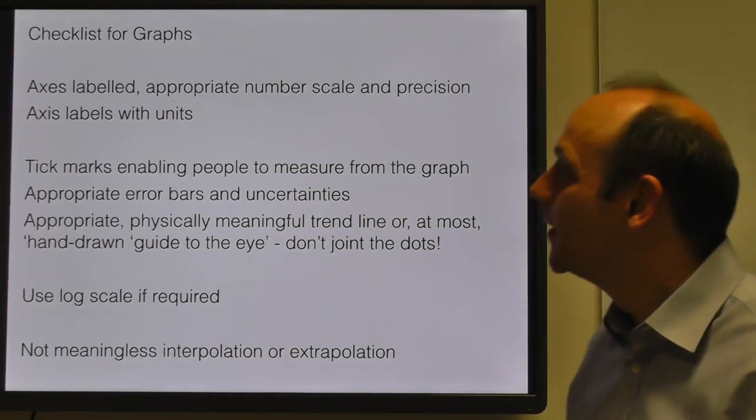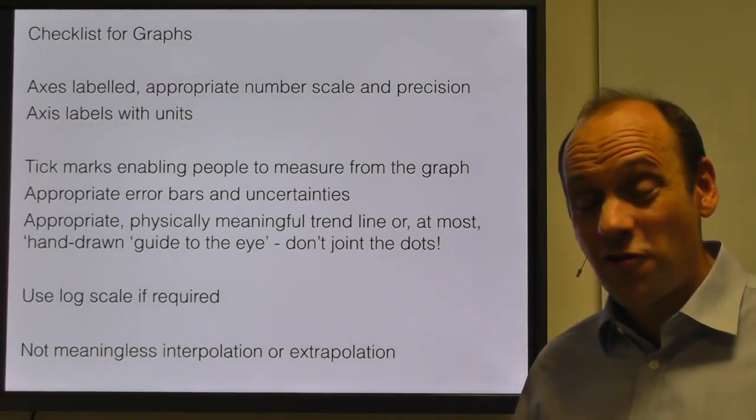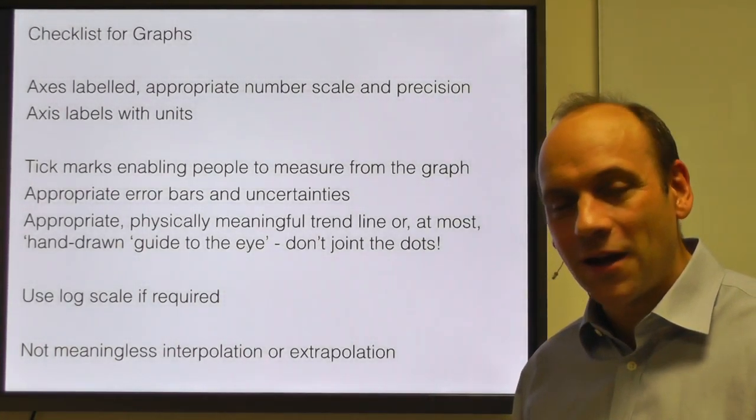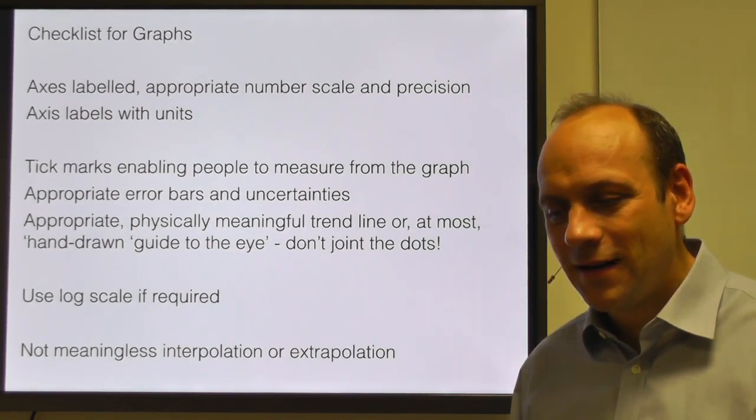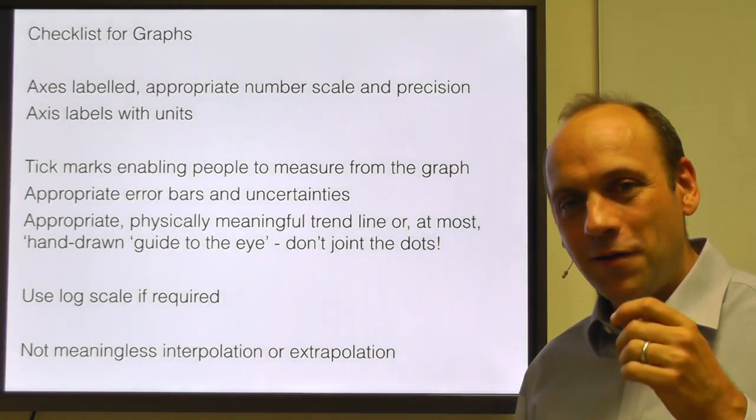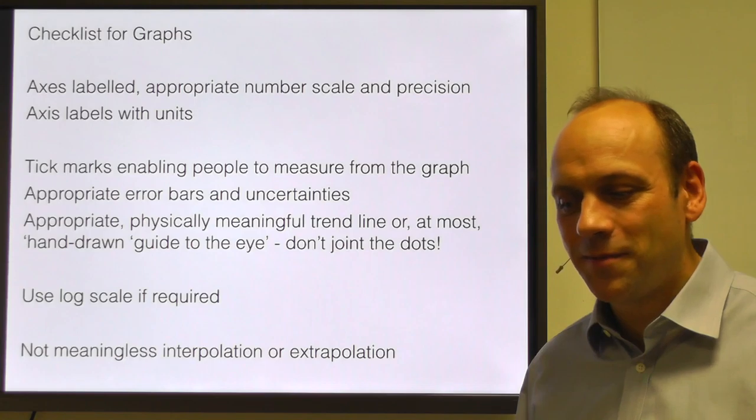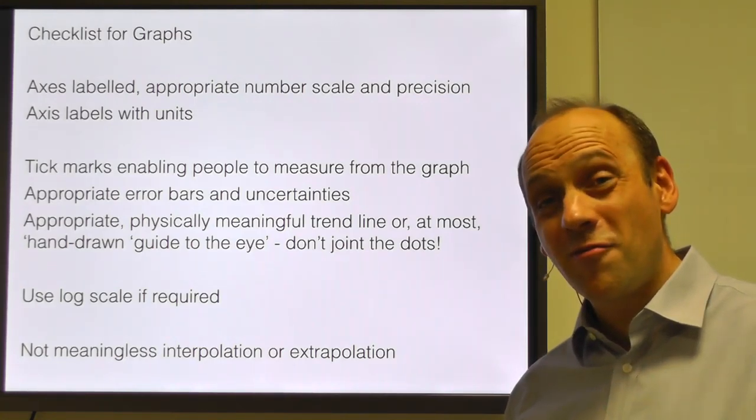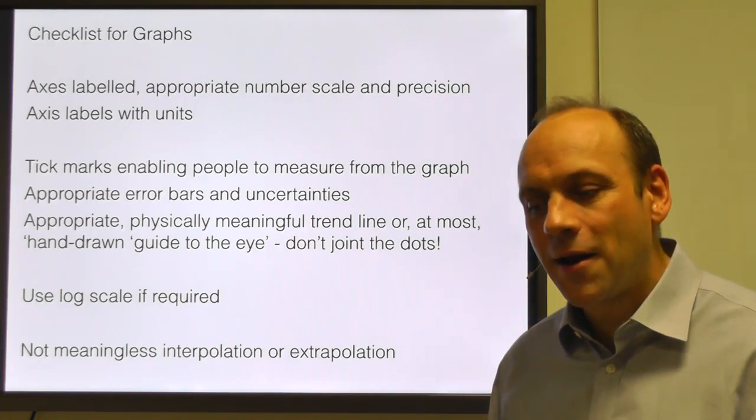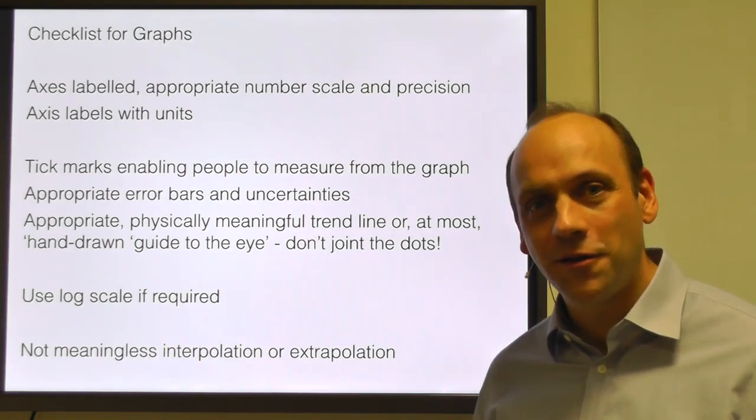So here's my checklist for graphs. The axes should be labeled. They should have an appropriate number scale with appropriate zeros in them and appropriate precision in those numbers. The axes should be labeled with what you're measuring and with units on them. You should have tick marks that enable people to measure from the graph. You should have appropriate error bars if at all possible and uncertainties on your data. And an appropriate physically meaningful trend line reflecting the hypothesis you have about what the data should be doing.